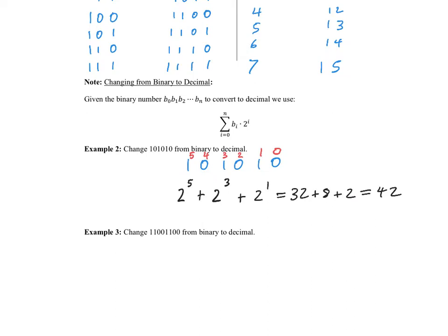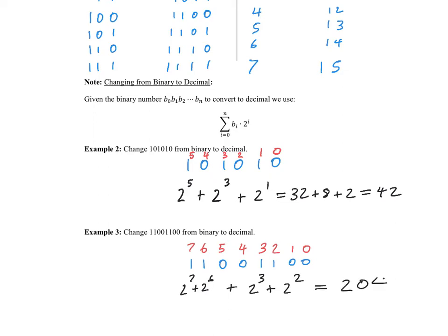Let's try this one more time. Copy down the number, write down the corresponding powers of 2, and then calculate the addition of all the powers of 2 that appear. We have 2 to the power of 7, plus 2 to the power of 6, plus 2 to the power of 3, plus 2 to the power of 2. If you calculate that, you will get 204.